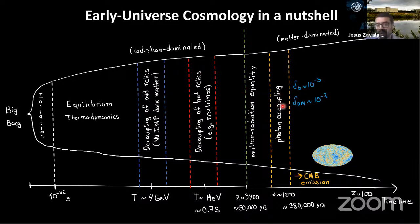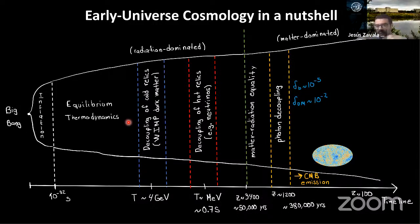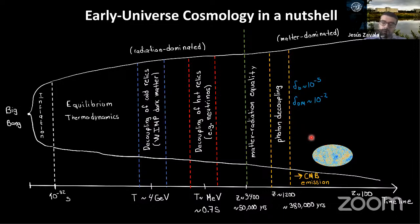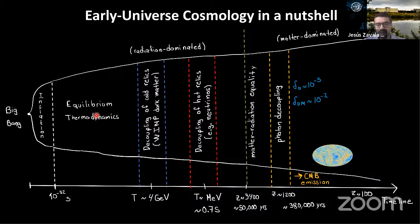After matter-radiation equality comes photon decoupling — the decoupling of photons from the plasma of electrons and protons — allowing the electrons and protons to combine to form neutral hydrogen. This is the epoch of recombination. The photons then stream freely and give rise to the cosmic microwave background radiation we observe today.